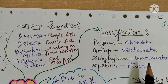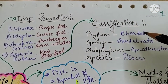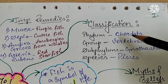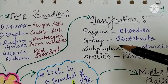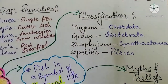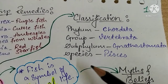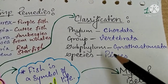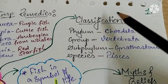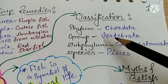Now we will see the common classification of fish: Phylum Chordata, Group Vertebrata, Subphylum Gnathostomata, and Species Pisces. This is the common classification of fish.